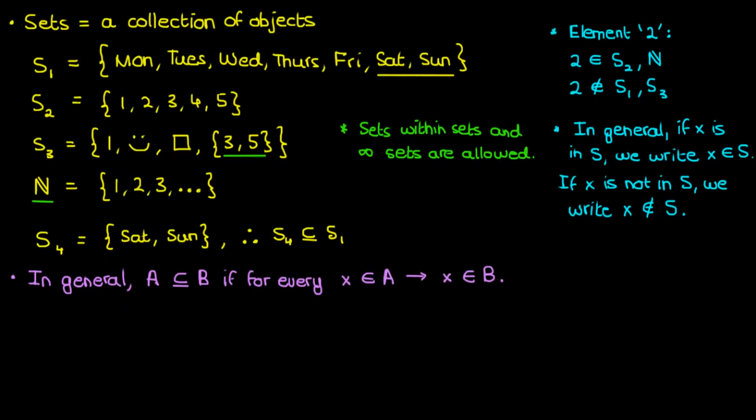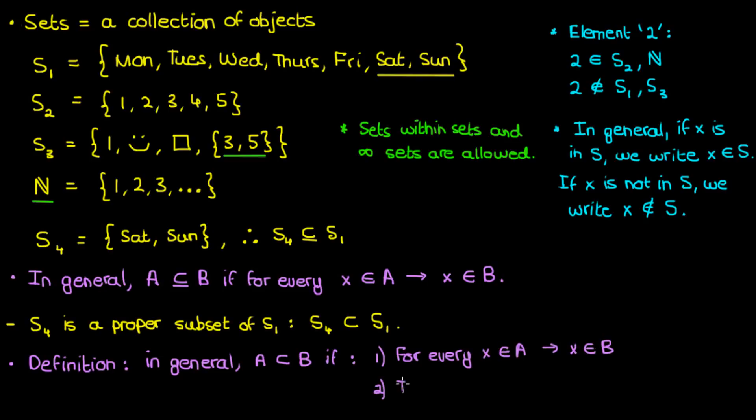Now in addition to saying that S4 is a subset of S1, we can also say that S4 is a proper subset of S1. In general a set A is a proper subset of set B if all the elements in A belong to B, and if B contains elements that do not belong to A. Essentially a proper subset is like a subset except one of the sets has to be bigger than the other.